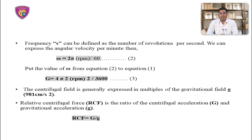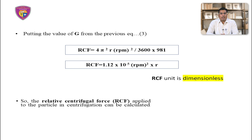Putting the value of Equation 2 into Equation 1, we get G = 4π² × RPM² / 3600 (Equation 3). The centrifugal field is generally expressed in multiples of the gravitational field g, where g = 981 cm/s². Relative centrifugal force RCF is the ratio of centrifugal acceleration G and gravitational acceleration g, so RCF = G/g. Substituting Equation 3: RCF = 4π² × r × RPM² / 3600.